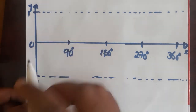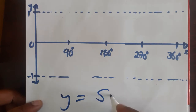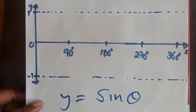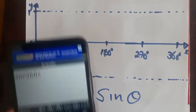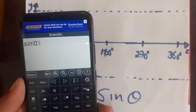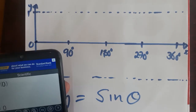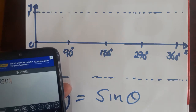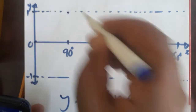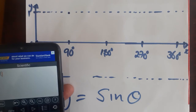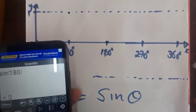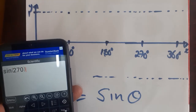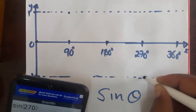So what you need to do: we are dealing with y equals sine theta. Here on the x-axis you put the angles. The first one is zero — sine zero gives you zero. You can use your calculator. Sine 90 degrees gives you one. Sine 180 gives you zero. Sine 270 is negative, so you go to negative one.